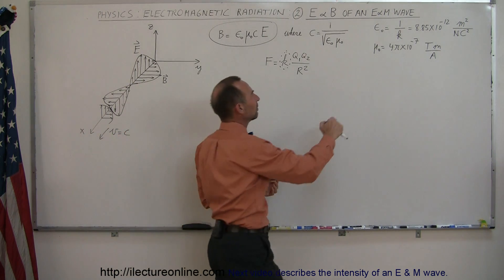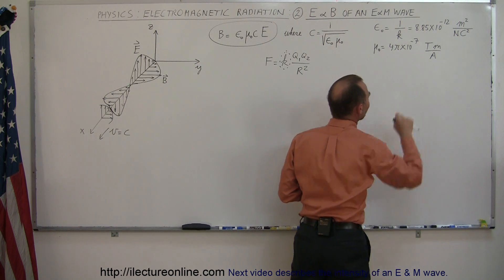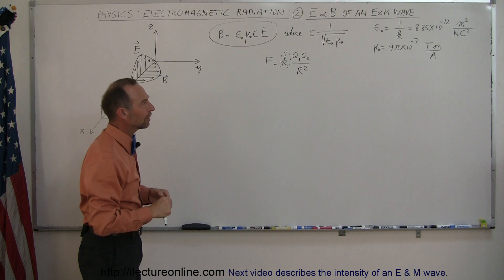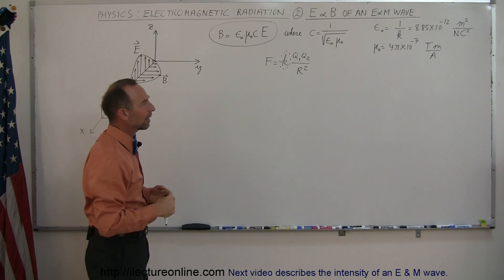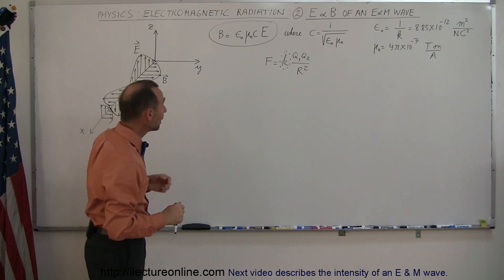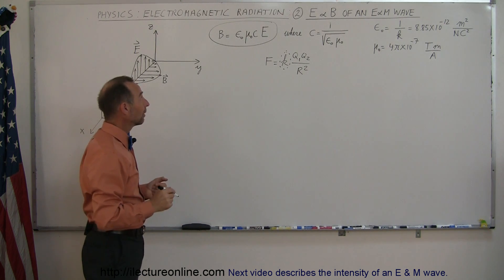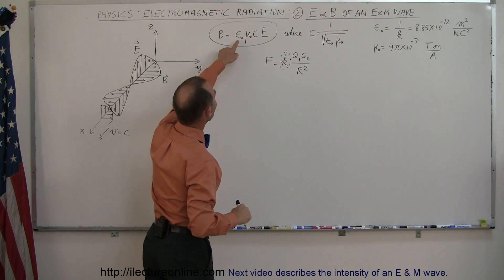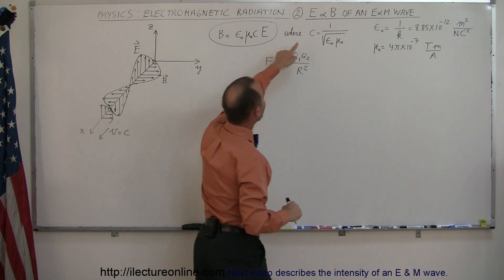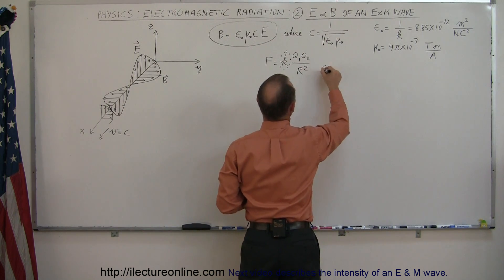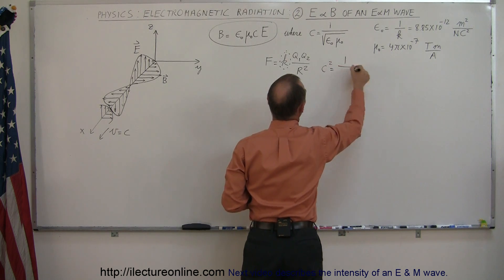Mu sub-naught can be found by taking 4 pi times 10 to the minus 7, with units of Teslas — the units of magnetic fields — times meters divided by amps. A stands for amps, not area. Knowing all that, epsilon sub-naught times mu sub-naught is equal to 1 over c squared. If you square both sides, you get c squared equals 1 over epsilon sub-naught times mu sub-naught.